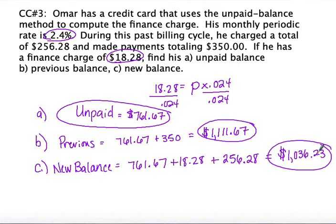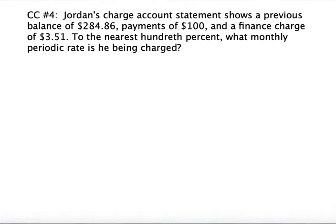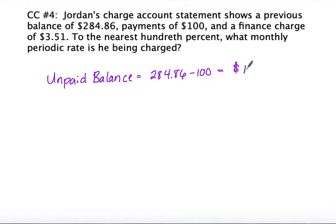That problem worked things backwards because we were never given the unpaid balance directly — we had to calculate it from the interest rate. For concept check number four, it's similar. Jordan's charge account shows a previous balance of $284.86, payments of $100, and a finance charge of $3.51. We know the finance charge but not the monthly periodic rate. First, we find the unpaid balance: $284.86 minus the $100 payment gives an unpaid balance of $184.86.